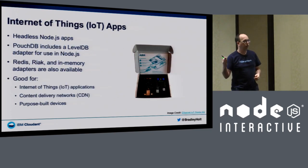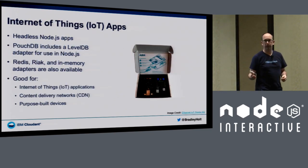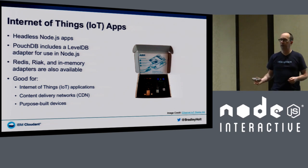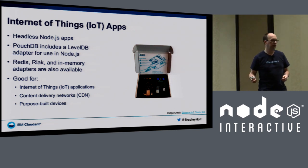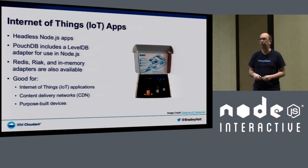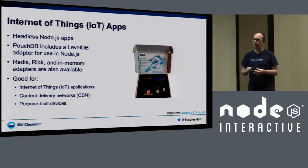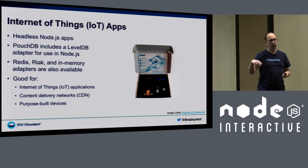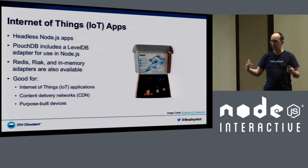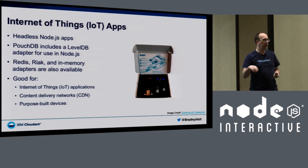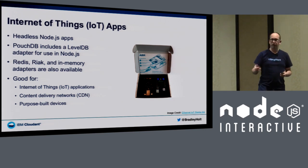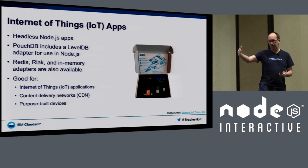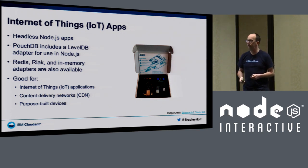And finally, Internet of Things: there's a whole track at this conference on running Node.js on IoT devices. You could actually run PouchDB as the database on an IoT device — say, a sensor collecting sensor data. It could store that data locally on the device and then, as it has an internet connection — even a spotty one — sync that data up to the cloud as needed.